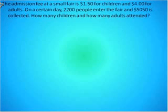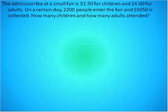Our first question: the admission fee at a small fair is $1.50 for children and $4 for adults. On a certain day, 2,200 people entered the fair and $5,050 was collected. How many children and how many adults attended? We want to identify our two variables — x will represent the number of children who attended and y will represent the number of adults who attended.